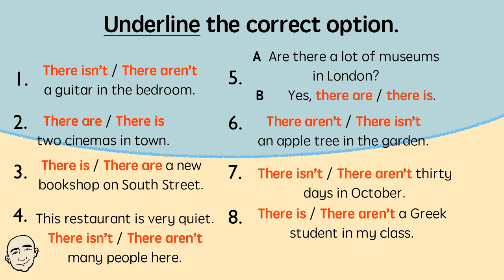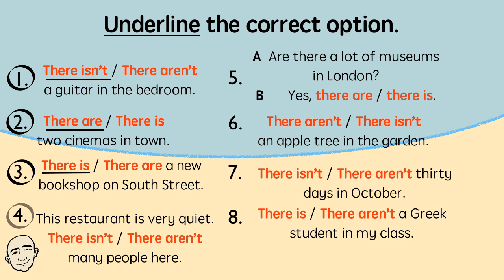Underline the correct option. There isn't a guitar in the bedroom. Underline the correct option. There are two cinemas in town. Underline the correct option. There is a new bookstore on South Street.